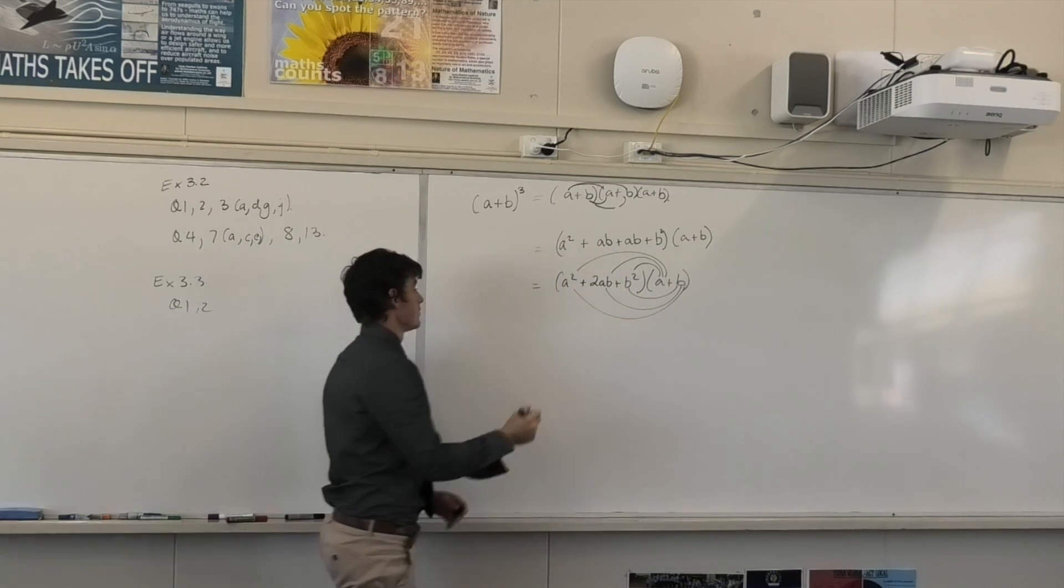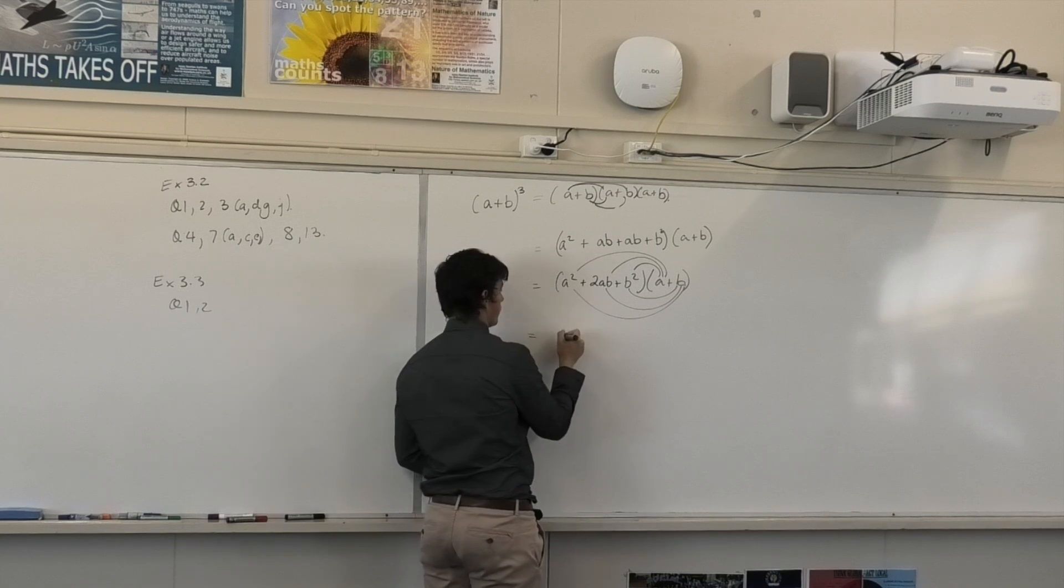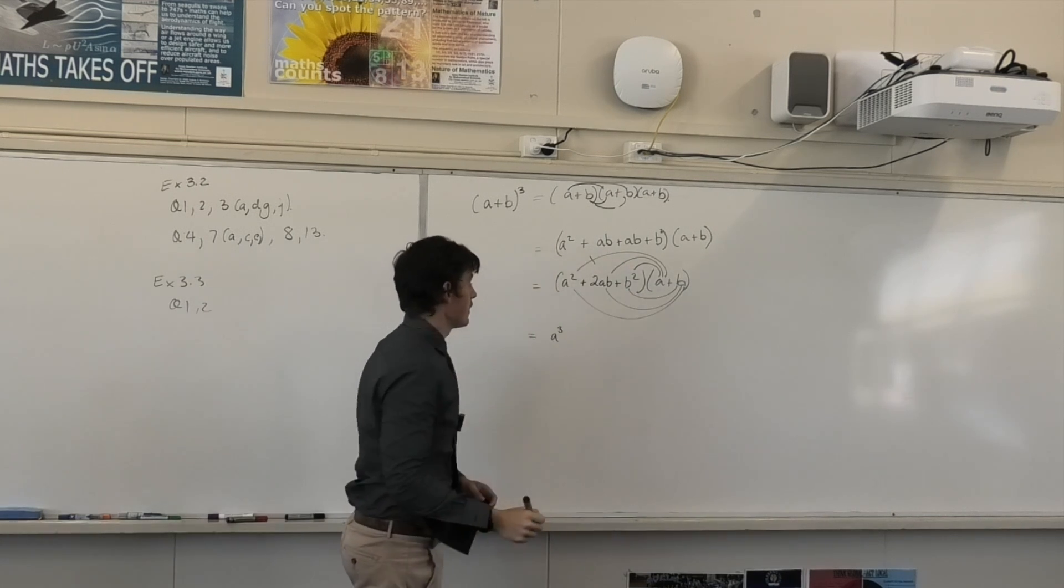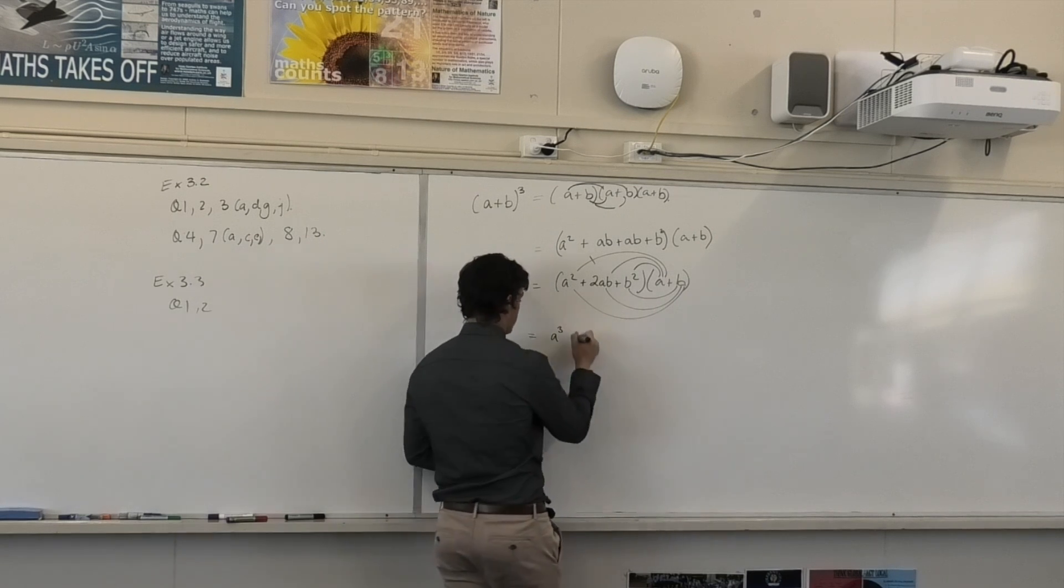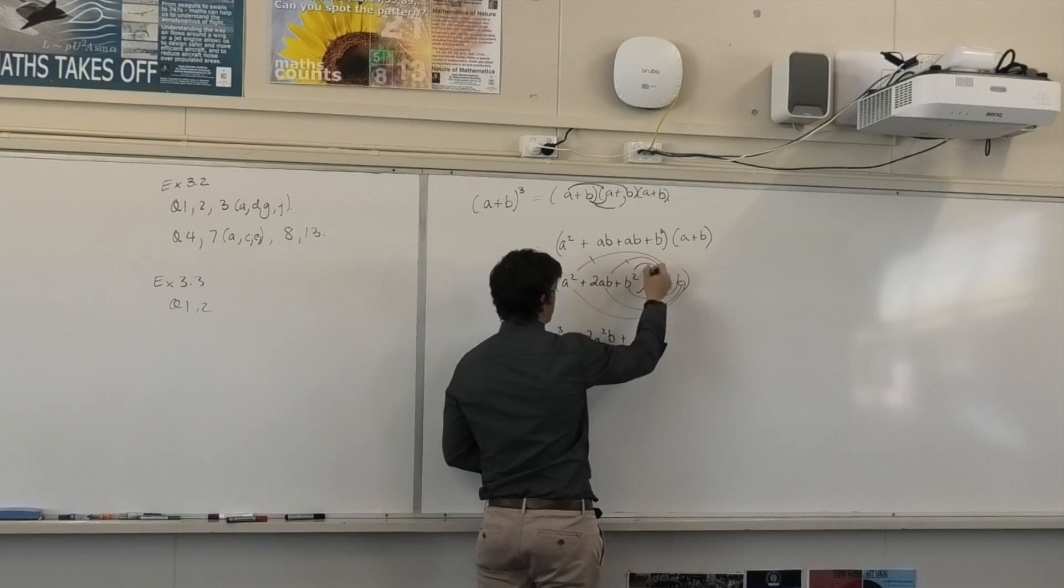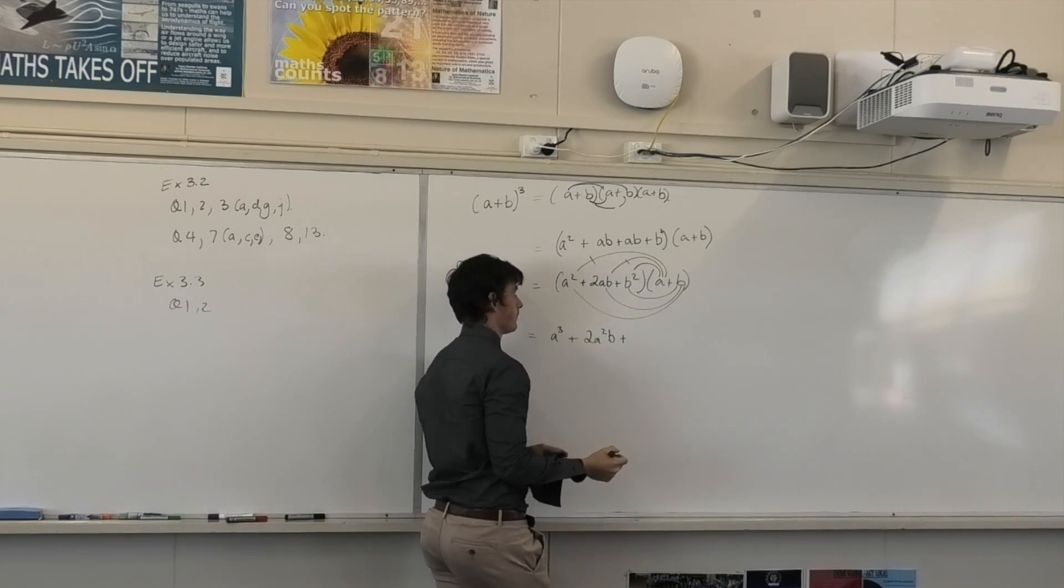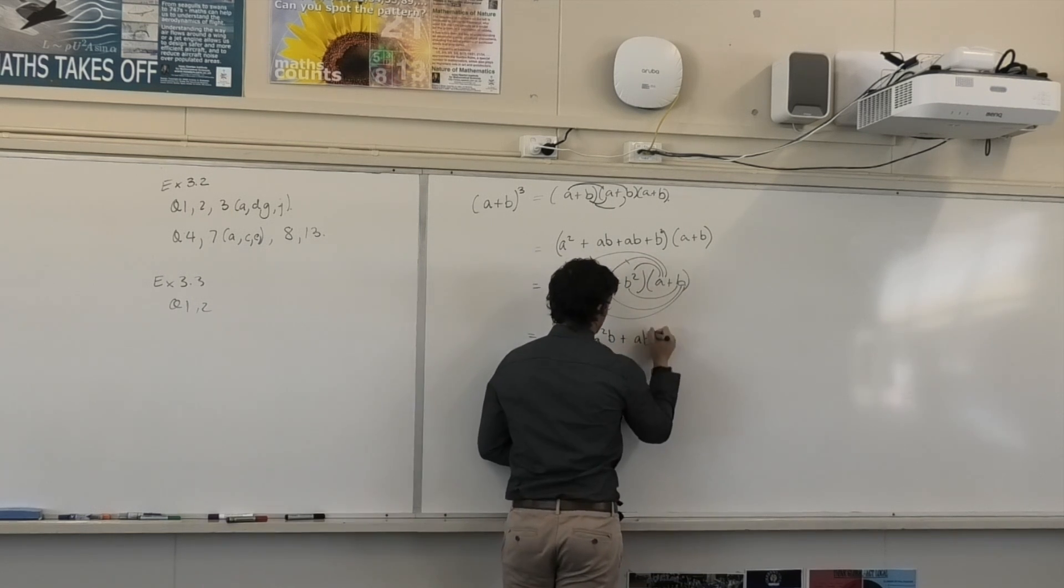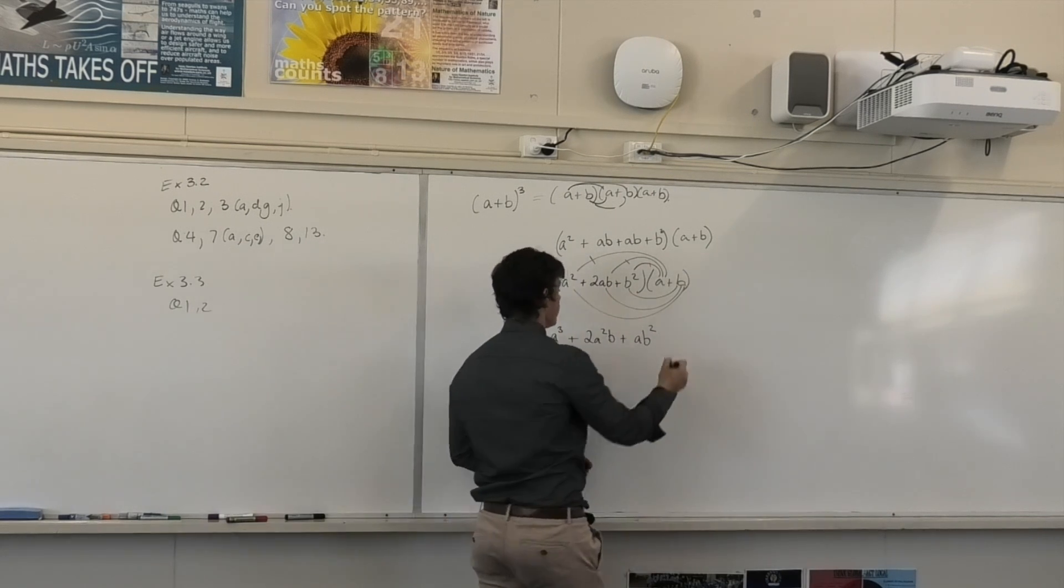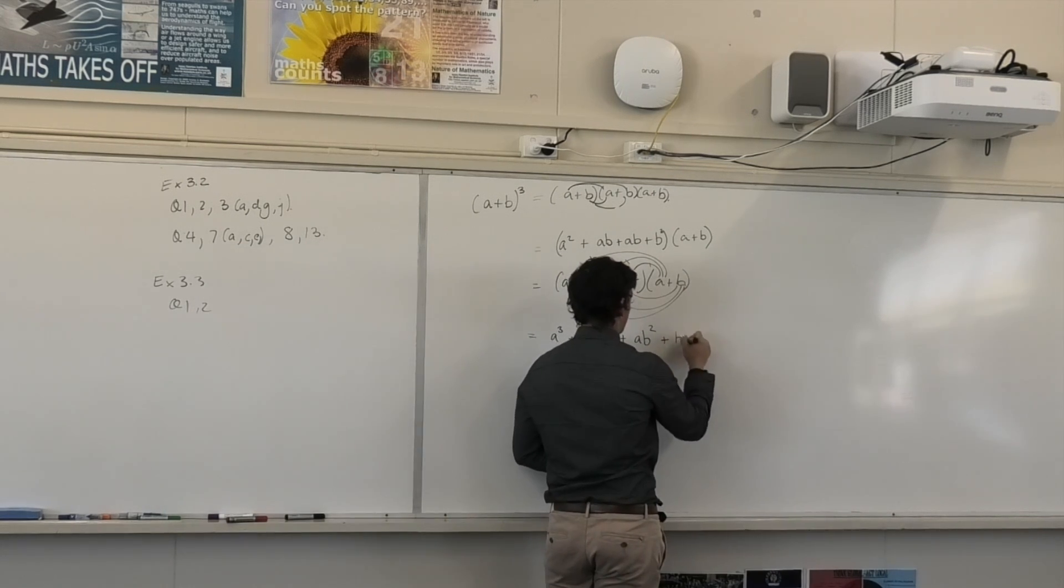So A times A squared is? A cubed. A cubed, cross that one off. 2AB times A? 2A squared B. Plus A times B squared? AB squared. AB squared.